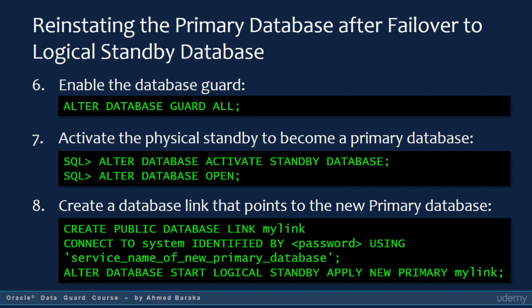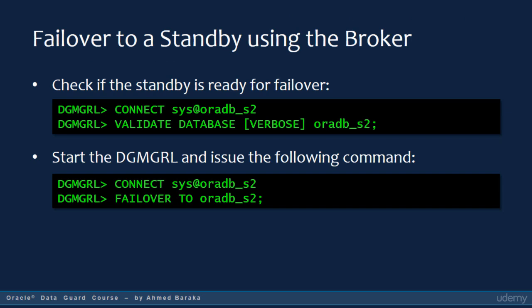It does look like a long procedure, but it is actually systematic. As with switching over, failing over using the broker is very easy. You use the VALIDATE DATABASE command to make sure that the standby database that you want to failover to is ready for failing over. Then you simply issue the command FAILOVER TO standby database name, and that's it. The broker will take care of the rest — it will wait for the target standby database to finish applying any unapplied redo data, then stop the apply process and proceed with the actions to make the standby database the new primary database.